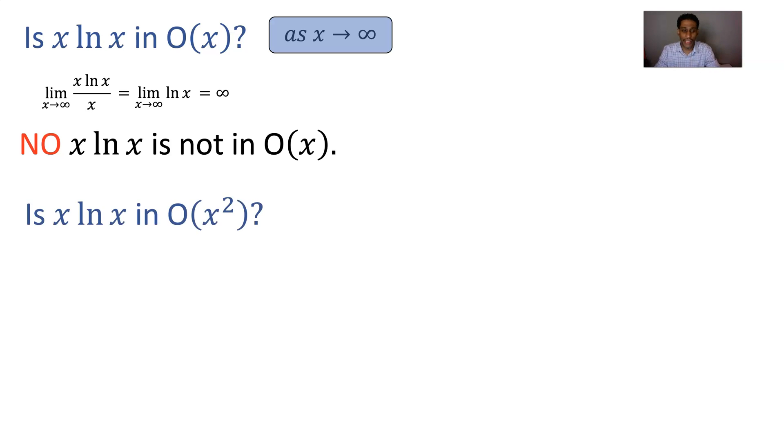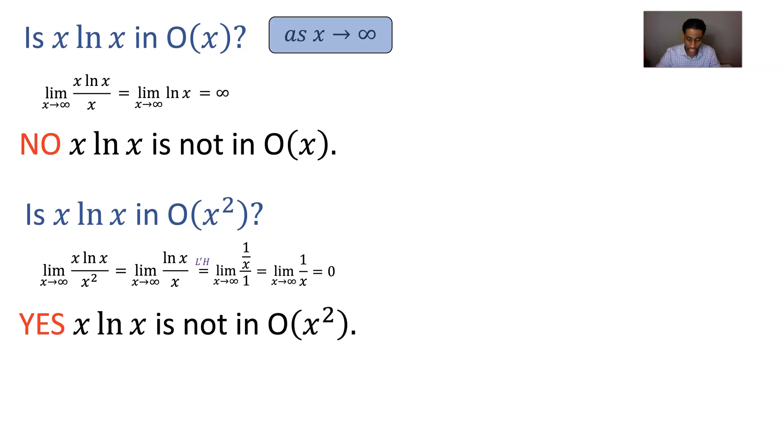All right, how about big O of x squared? Is x log x in big O of x squared? Take the same limit but now divide by x squared. Cancel one of the x's, you still have an x underneath. This is infinity over infinity. We can execute L'Hopital's rule. We'll end up with one over x. Now as x goes to infinity, that's going to go to zero. And so the answer is yes here. It's because x squared, x log x grows no faster than x squared. x squared grows faster than x log x when this limit is zero like that.